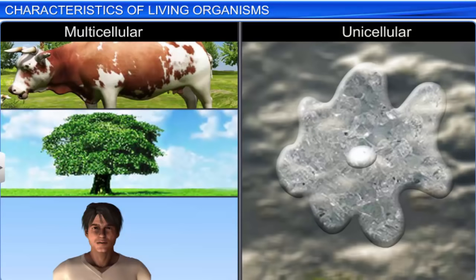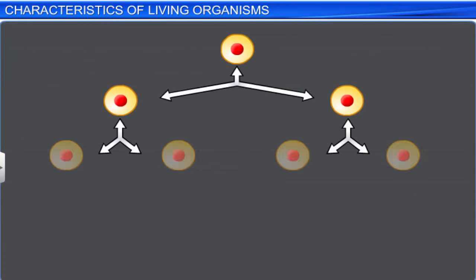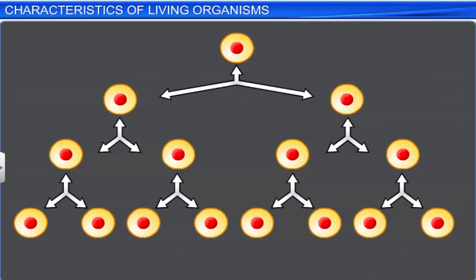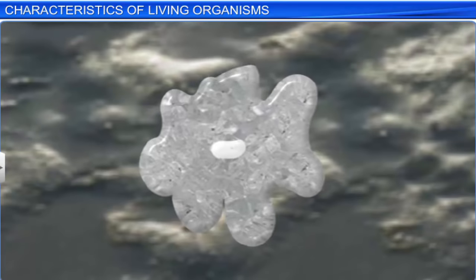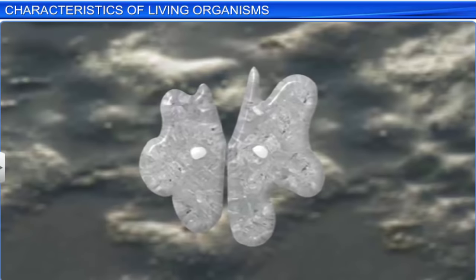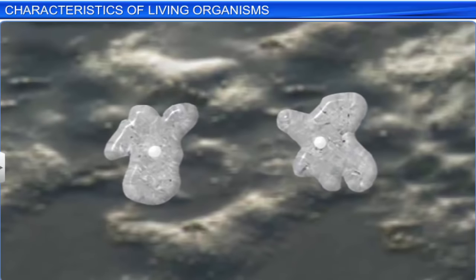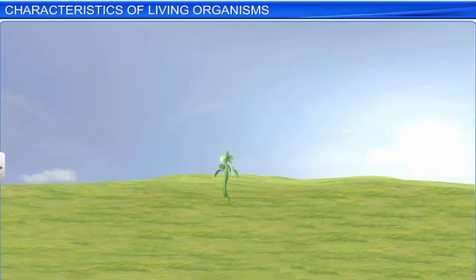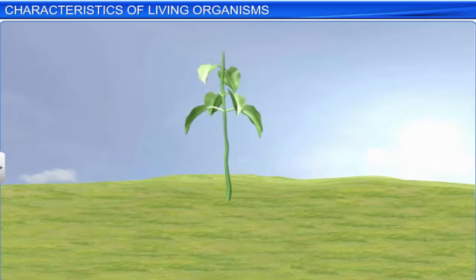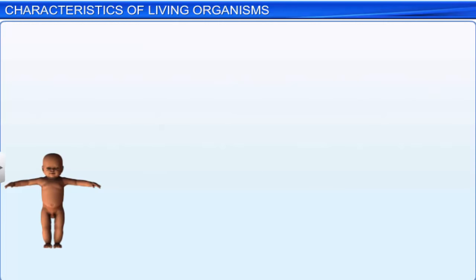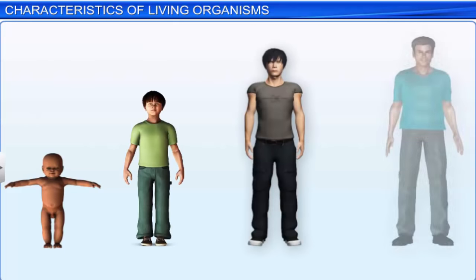However, cell division affects these organisms differently. In a multicellular organism, cell division results in an increase in mass. Whereas, in a unicellular organism like amoeba, it leads to the formation of two new organisms. Interestingly, plants grow through cell division throughout their life span. While animals, including humans, grow up to a certain age.